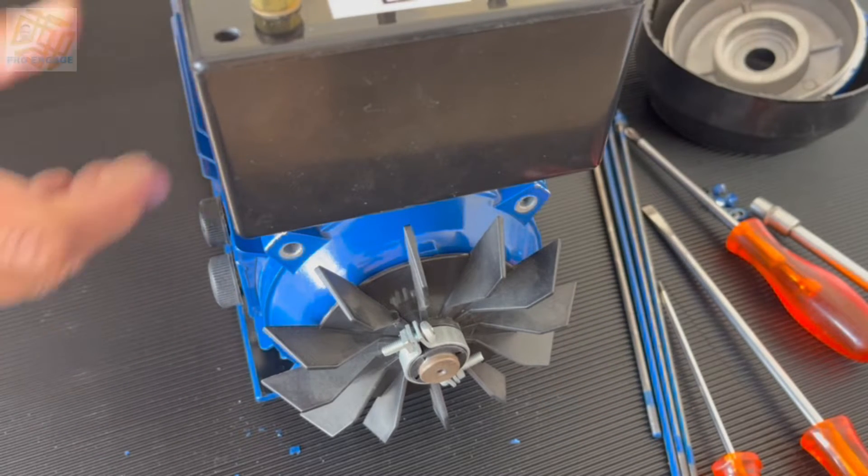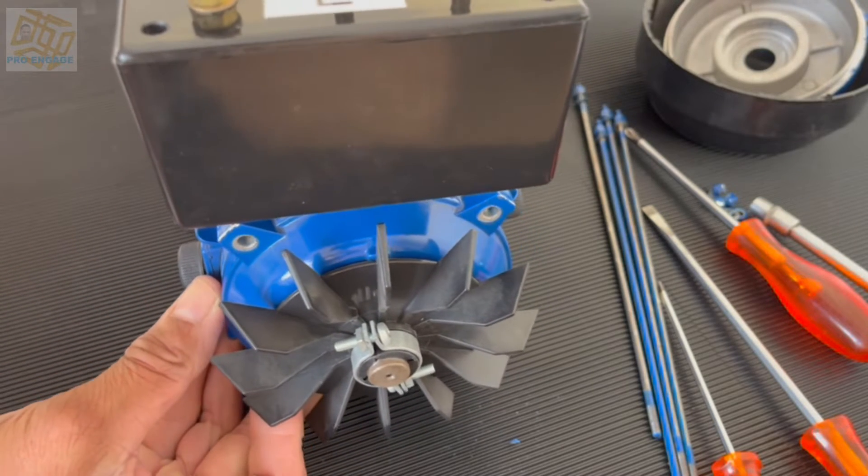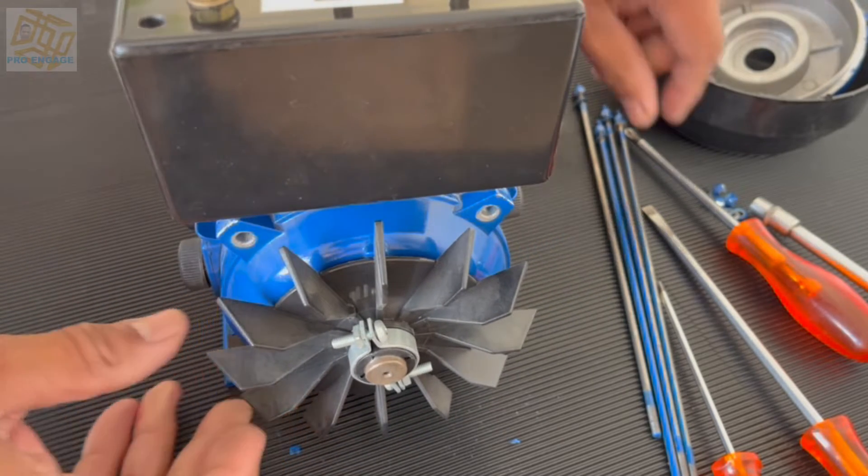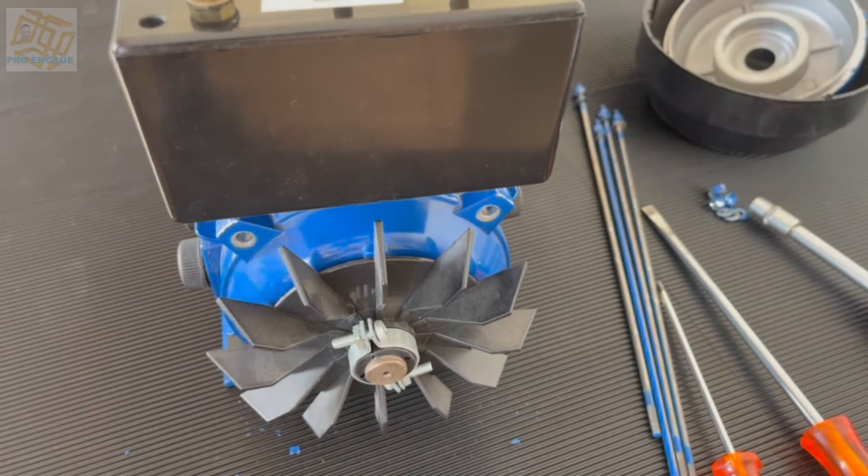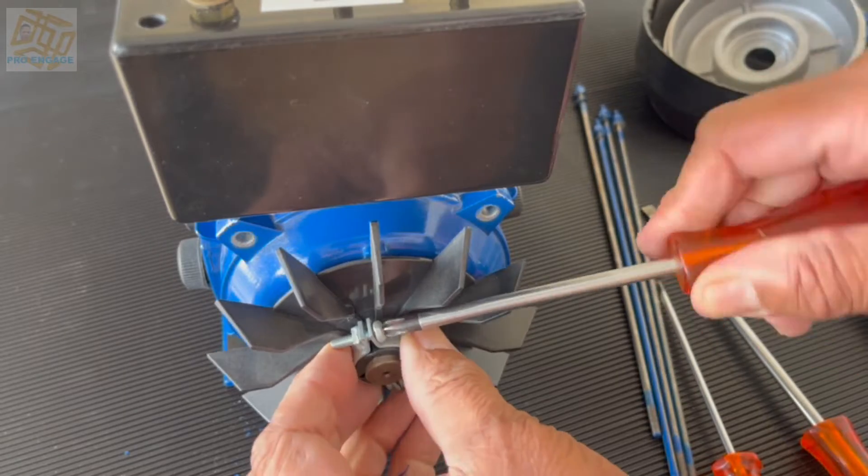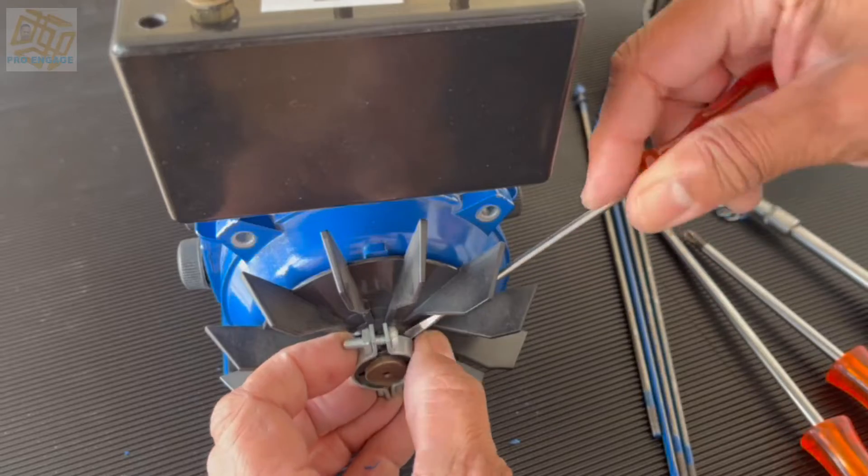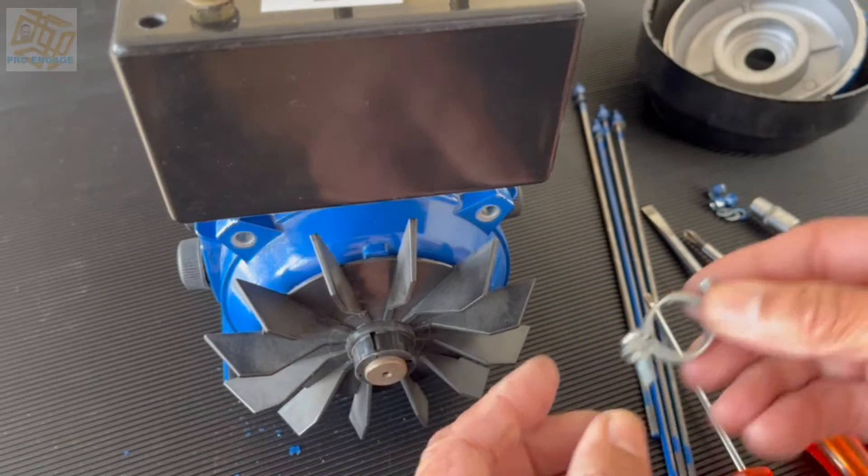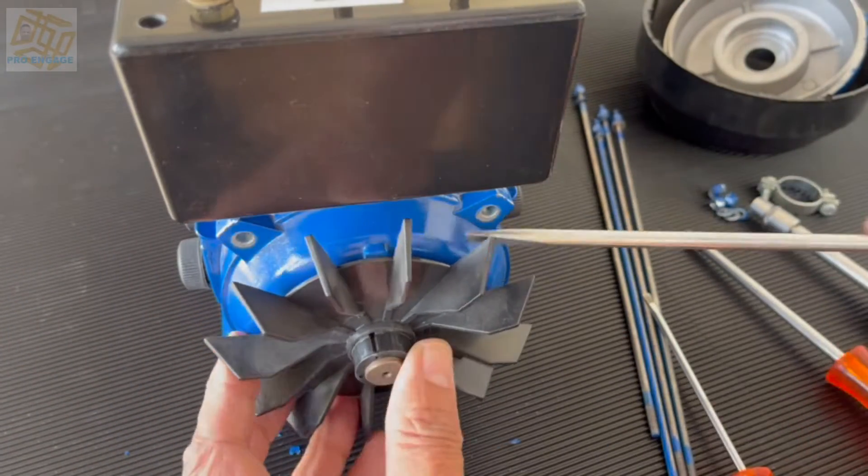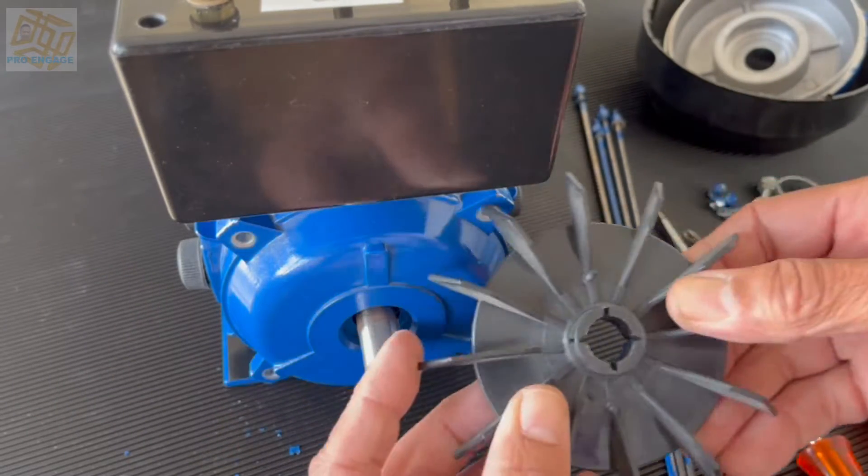In order for that to happen I need to get this back end plate off. So I first have to remove the fan. That silver clip needs to come off first, then the fan, and then the back end cover or the back end shield.